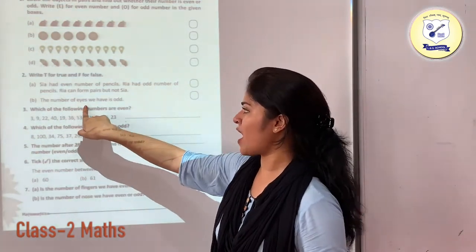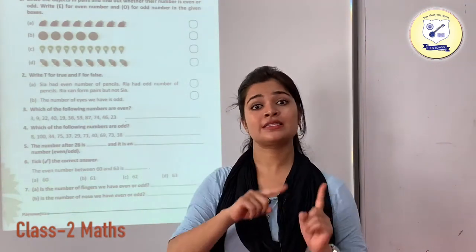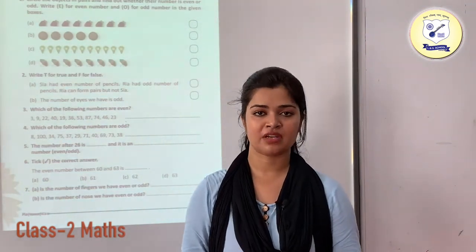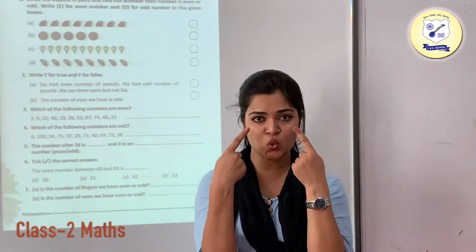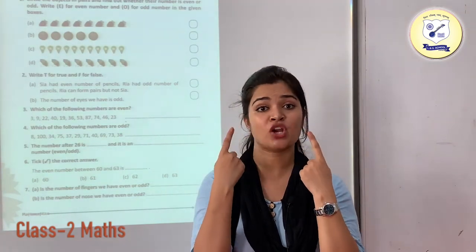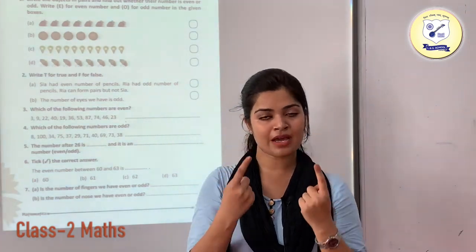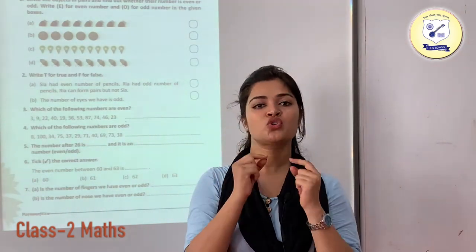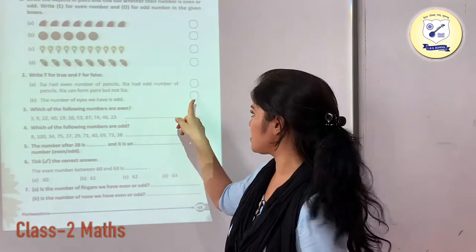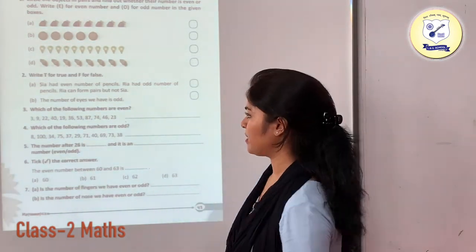The number of eyes we have is odd — this is again your incorrect statement. Since we are having two eyes and these two eyes can make a pair of two, they are even in number. So this is again your false statement.